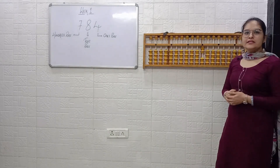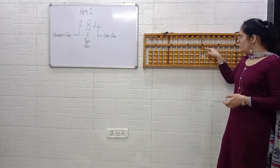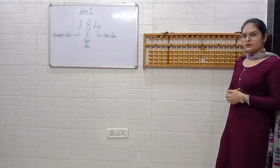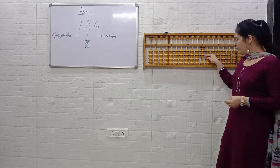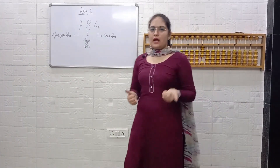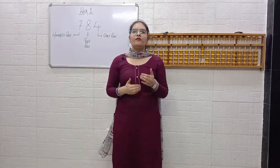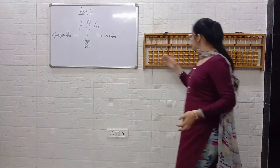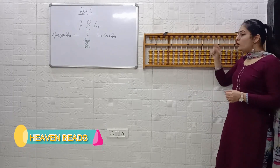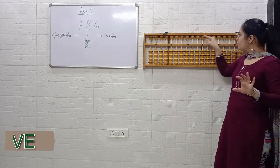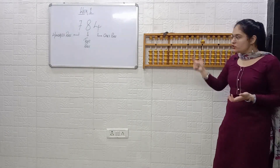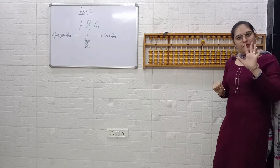Now tell me the answer — hurry up. Answer is 2. Next: answer is 3. Now let's move further. We will include the Heaven bead as well. The value of a Heaven bead is 5. If this bead is touching the value bar, it is giving you a value, so the answer is 5.